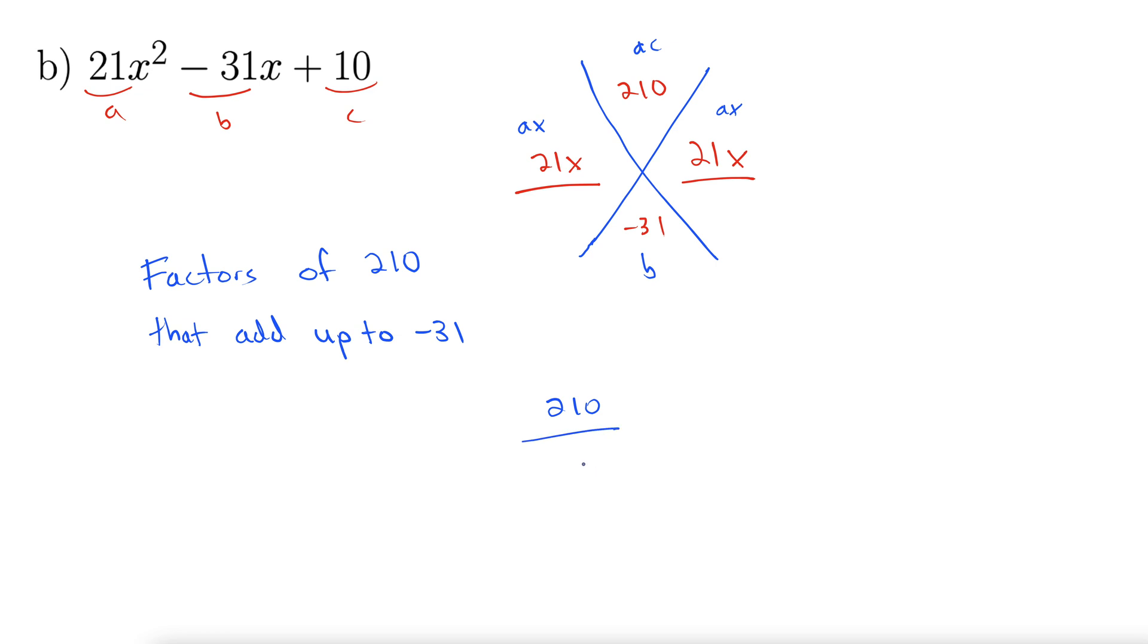So let's write our 210 here and then get busy factoring. Again, I disregard the negatives until the very last kind of minute with these once I get down into the nitty-gritty of factoring them. When I look at 210, the first thing that jumps out to me is 21 times 10. And that is a lucky guess because when I add those together, I get 31. So I know I'm close.